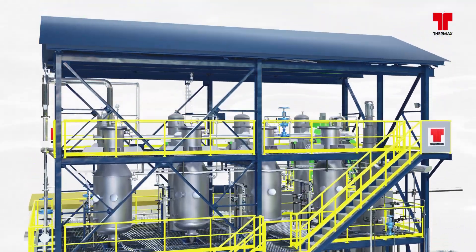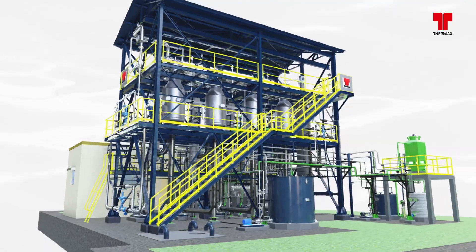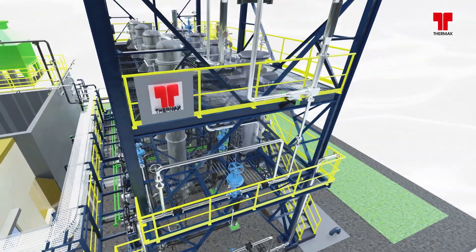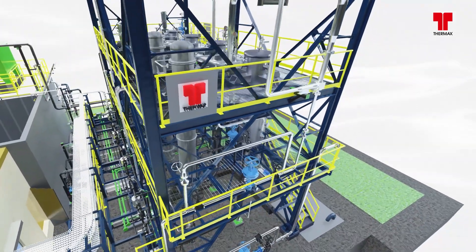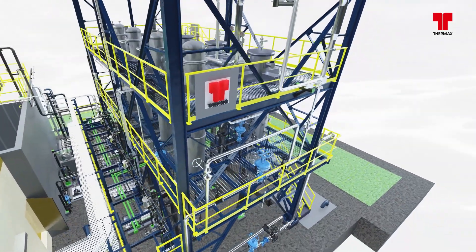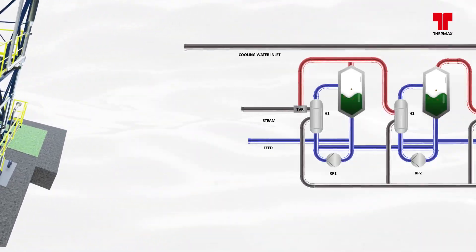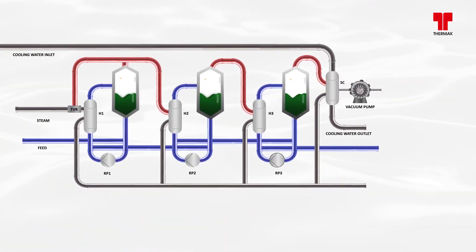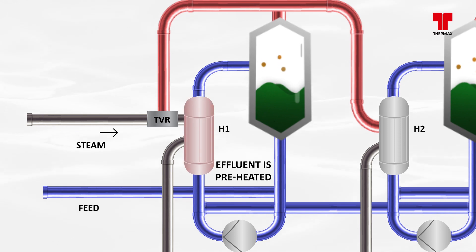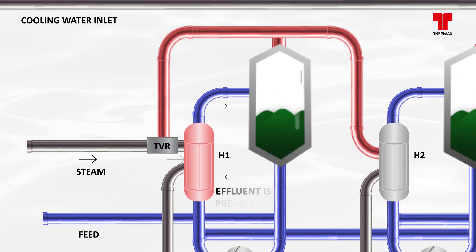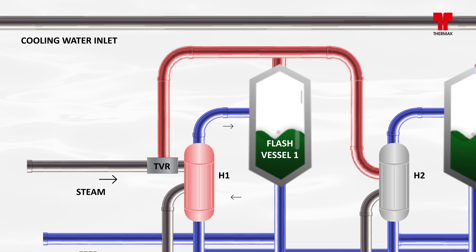An advanced MEE consists of a sequence of stages, heat exchangers, and flash vessels. Considering the forward feed mechanism, the heat source is provided at the first heat exchanger. The effluent is preheated with the help of the condensate from heat exchangers and then fed to the first flash vessel.